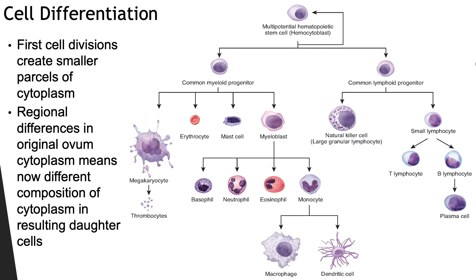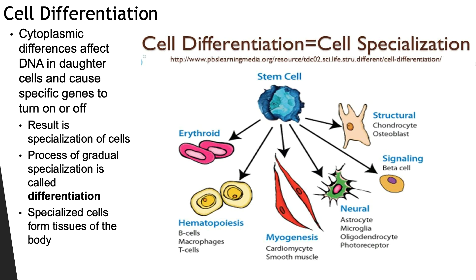Continuing with cell differentiation: you start off with the most general and become specific through differentiation. That first cell division creates a smaller parcel of the cytoplasm, and through cytoplasmic differences you increase the level of specialization. Those cytoplasmic differences cause specific genes locked inside the DNA to either turn on or turn off, which causes the development of special characteristics.